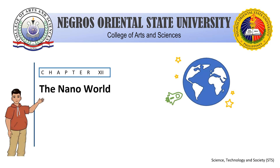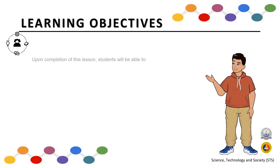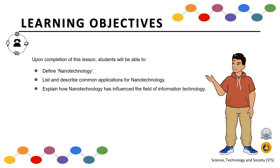Chapter 12: The Nanoworld. Learning Objectives: Upon completion of this lesson, students will be able to define nanotechnology, list and describe common applications for nanotechnology, explain how nanotechnology has influenced the field of information technology, and distinguish the advantages and disadvantages of nanotechnology.